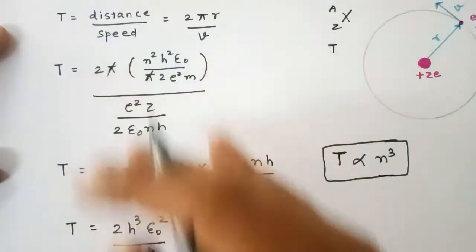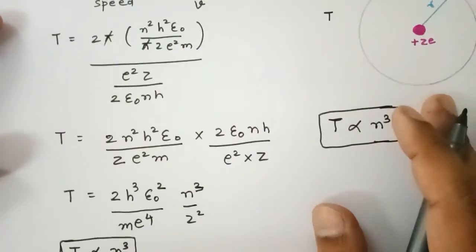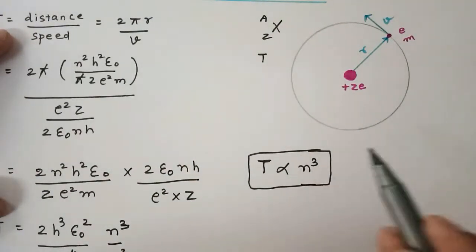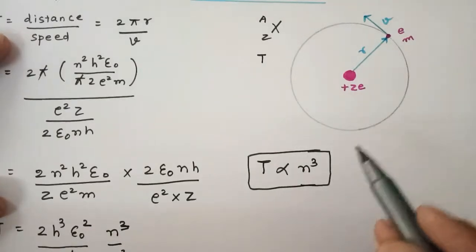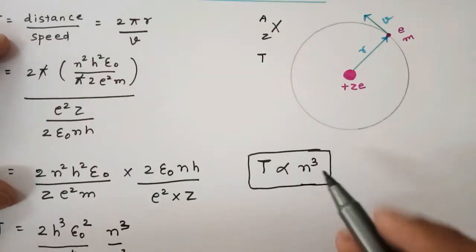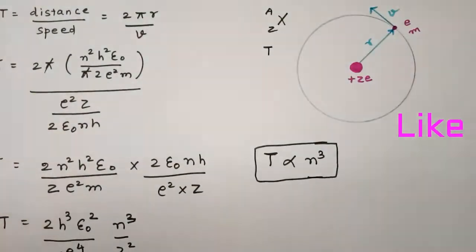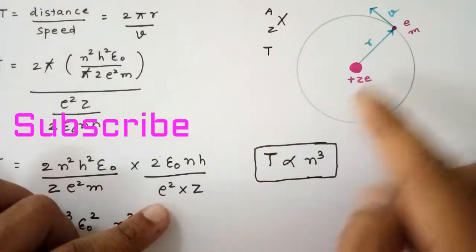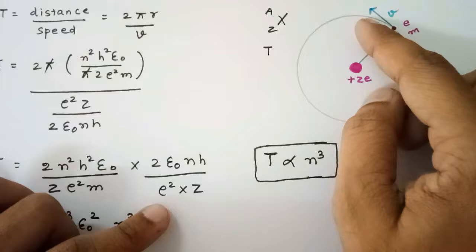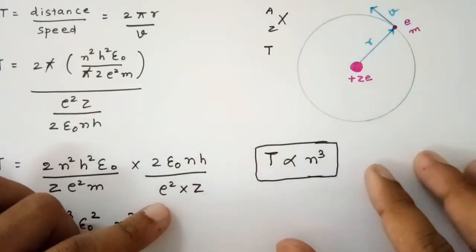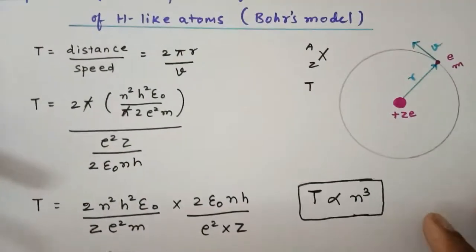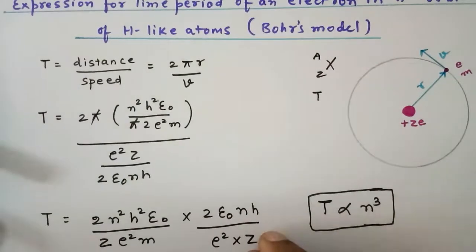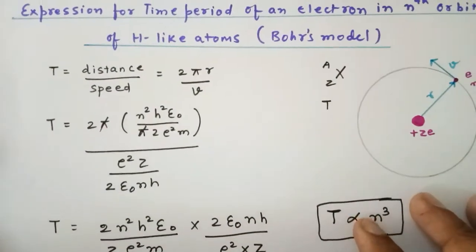Just go through this again and you would find it more interesting. From here we can say that as the orbit keeps on increasing — this N is the principal quantum number — if the principal quantum number keeps on increasing, then the time taken by an electron would be gradually increasing. Hopefully you like my explanation, do subscribe to my channel. Thank you for watching the videos.